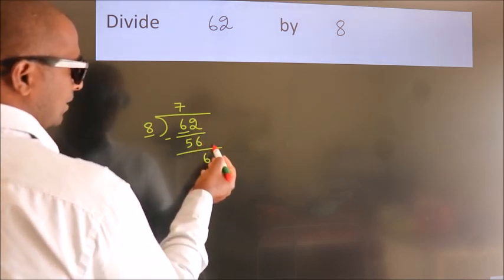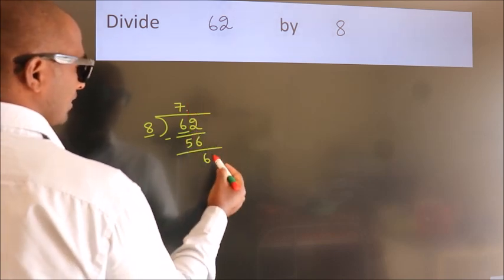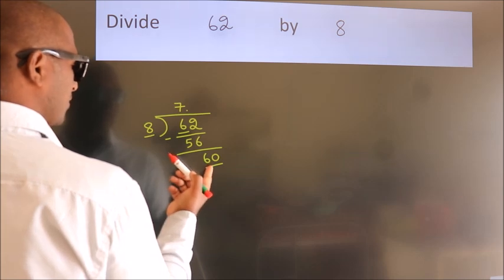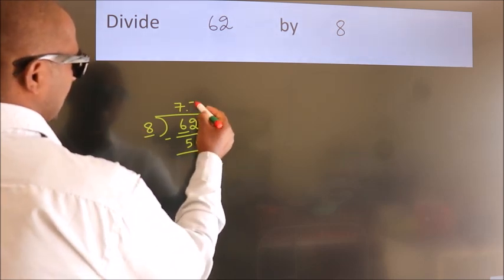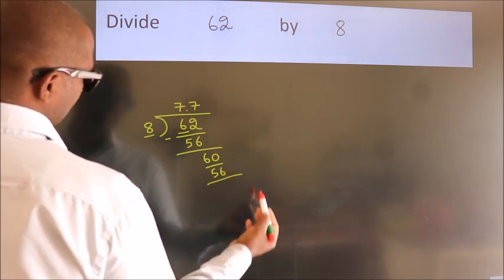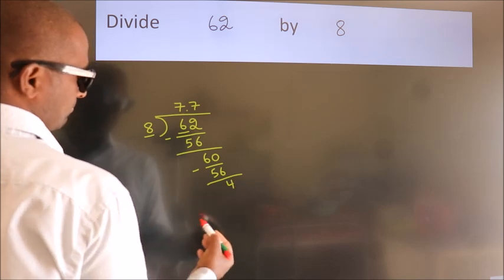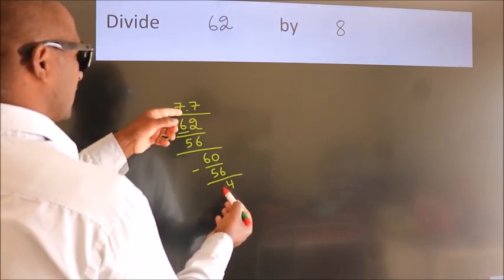No more numbers to bring down, so what we do is put a dot and take zero, so 60. A number close to 60 in the 8 table is 8 times 7 equals 56. Now we subtract, we get 4. After this, we already have the decimal.